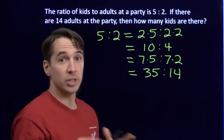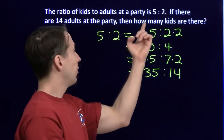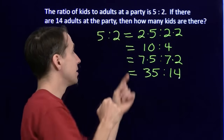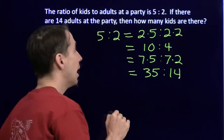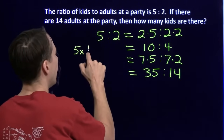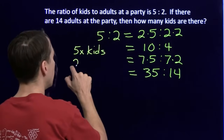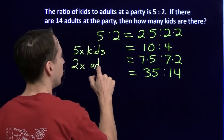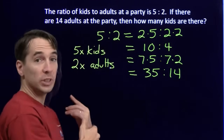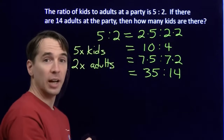This is just one way to think about ratios — we're going to see a lot of different ways. Another way: if we have a ratio of 5 to 2 kids to adults, and imagine we have x of these groups, then we have 5x kids and 2x adults. We're told there are 14 adults, so 2x equals 14, which means x equals 7. Substituting back in, 5 times 7 is 35. We get 35 kids once again.